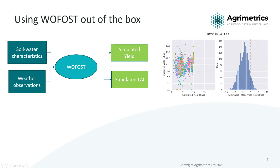I like the plot on the right for this — if you look at the delta, the simulated minus observed, we can see the majority of the distribution is below the zero point, and so this is showing we've got a high negative bias in our yield predictions.